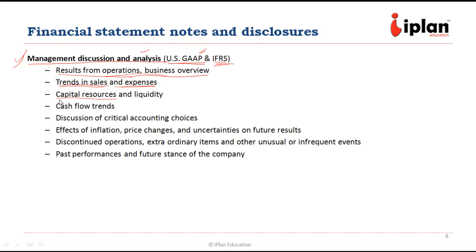MDA also covers capital resources — the sources of short-term and long-term funds, the liquidity situation, trends in cash flows (whether positive or negative overall), and descriptions of cash flows from operations, financing, or investing activities and the trends therein. MDA also includes a discussion of critical accounting choices — if a firm is deliberately making a particular accounting choice, a description must be given. MDA also covers the effects of inflation, price changes, or other uncertainties that can impact future results.